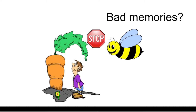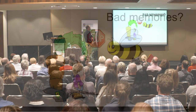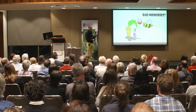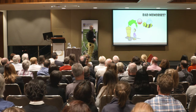As chemists, we can look at the carrots and examine the floral odors, the nectar, and the pollen, analyzing these things to figure out what's stopping the bees from being attracted to the carrot and what's giving them bad memories so they're not coming back for pollination.